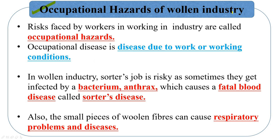Now we will study about occupational hazards of the woolen industry. Risks faced by workers in an industry are called occupational hazards, and diseases caused by work or working conditions are called occupational diseases. In the woolen industry, a sorter's job is risky — sometimes sorters get infected by a bacteria called anthrax, which causes a fatal blood disease known as sorter's disease. Also, small pieces of woolen fibers can cause respiratory problems.